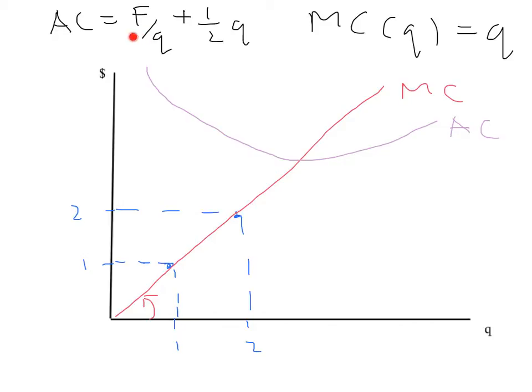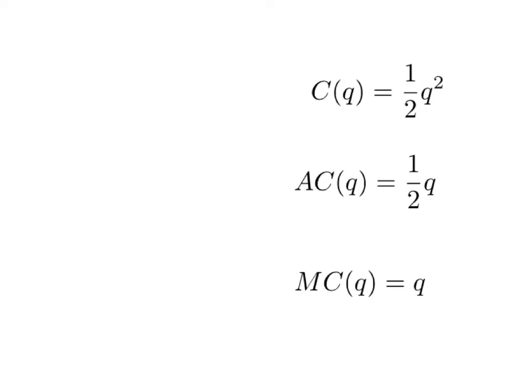With fixed cost equal to zero, marginal cost of Q is still equal to Q, so our marginal cost curve won't change. But the fixed cost has disappeared, so total cost is just one-half Q squared, which means average cost — dividing total cost by Q — is simply one-half Q. So marginal cost equals Q and average cost equals one-half Q; they're both nice straight lines.